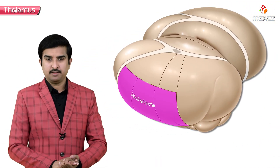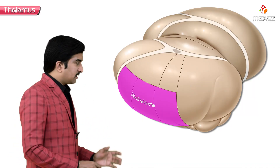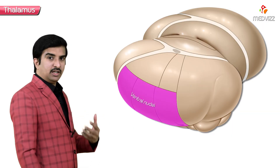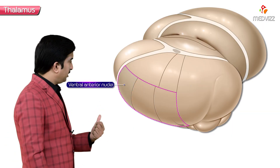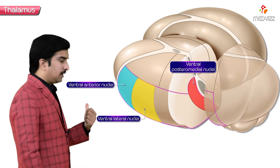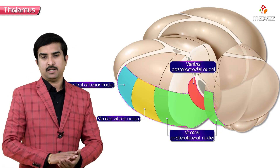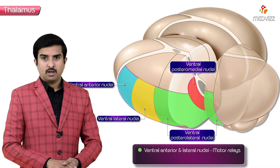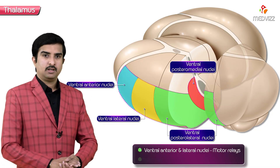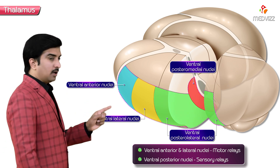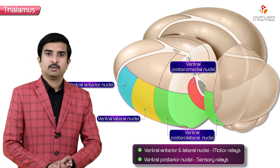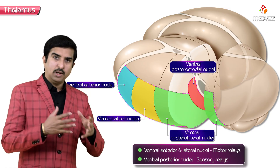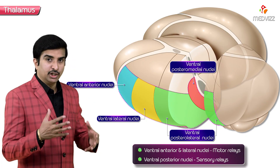Next is the ventral nuclei. We can see here there are numerous nuclei. These ventral nuclei are divided into anterior, lateral, posteromedial, and posterolateral nuclei. The anterior and lateral nuclei are motor relays, and the posterior nuclei are sensory relays — this is how motor as well as sensory information relay in the thalamus at different nuclei.